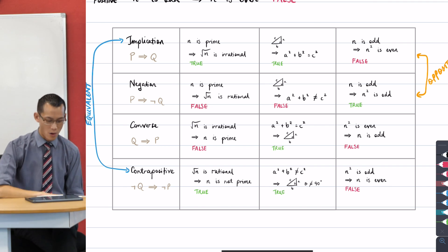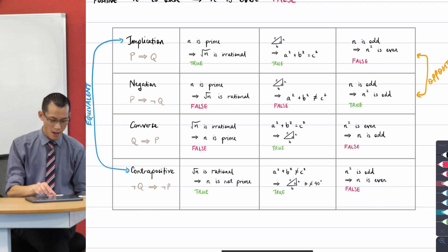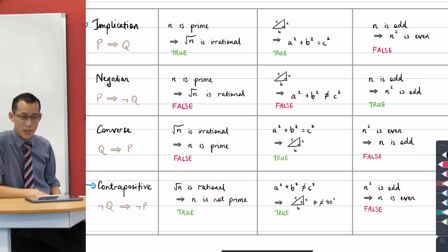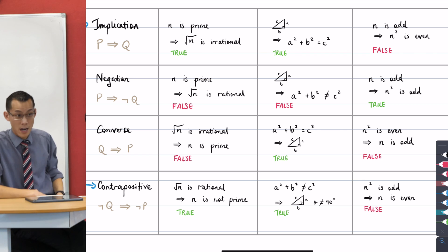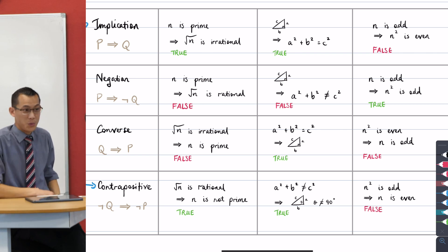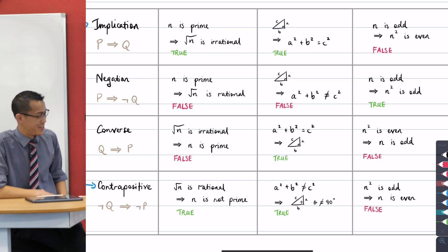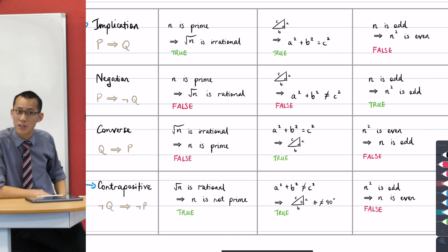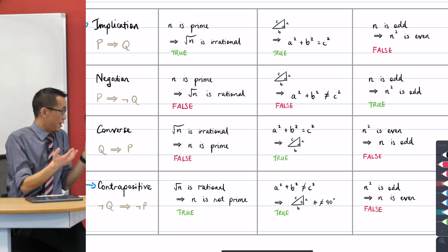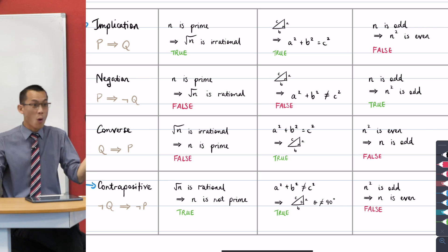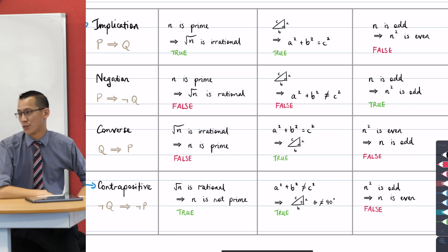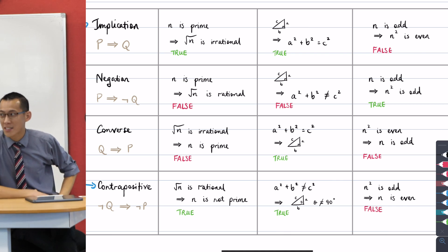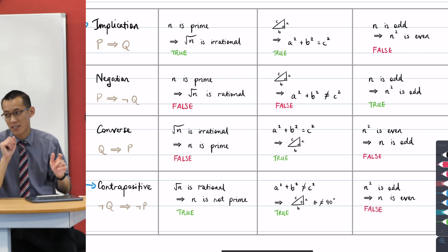Now the reason I picked out these particular examples for your first two columns is I want you to have a look at my converses. The converse for the first one was false — it's not always true. And Zhao gave us a great counter-example: six will do it, eight will do it; in fact, a whole bunch of even numbers will do it. But sometimes the converse is true. In fact, one of the first things you learned to do with Pythagoras' theorem was: if you have some triangle and you know its sides but don't know if it's right-angled, you can prove it's right-angled if the sides form a Pythagorean triad. So converses can be true, but they aren't always. Great care needs to be taken.